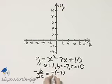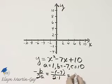So what is that? That's 7 halves or 3 and 1 half. So the x value of the vertex is 3 and 1 half, or 3.5.